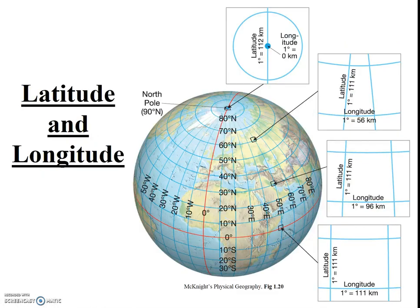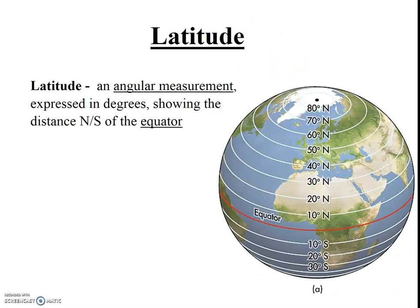The latitude-longitude system does not rely on numbers and letters. Rather, we use directions north and south of a reference line, and also east and west of another reference line. Latitude is an angular measurement expressed in degrees that shows the distance north and south of the reference line called the equator. Thus, for latitude, the equator is our natural reference line. It represents zero degrees latitude.